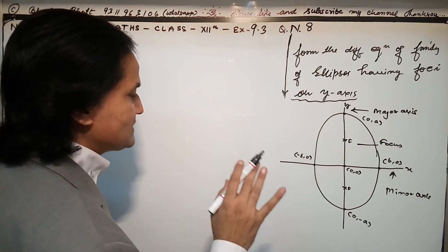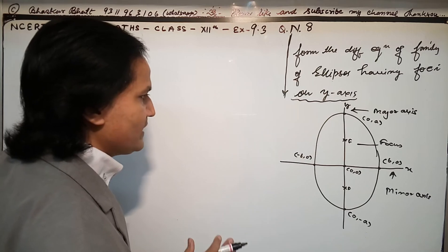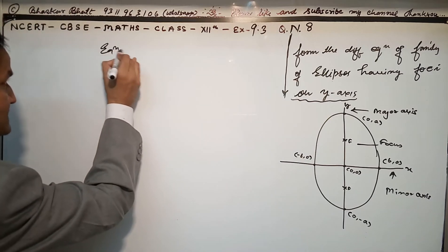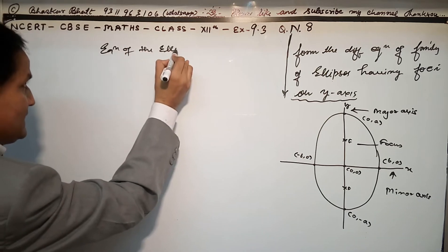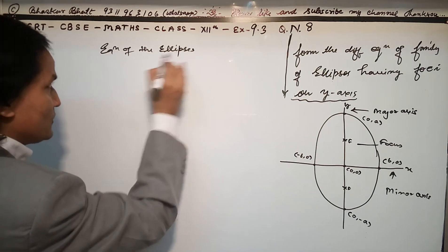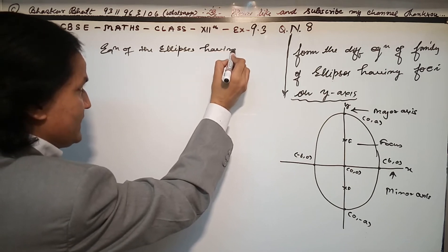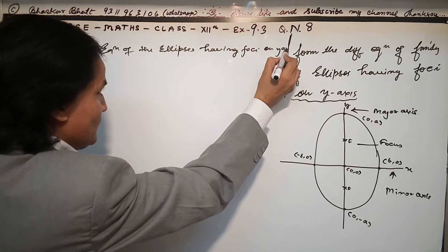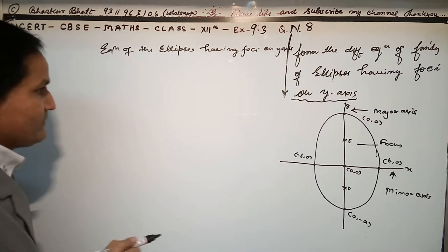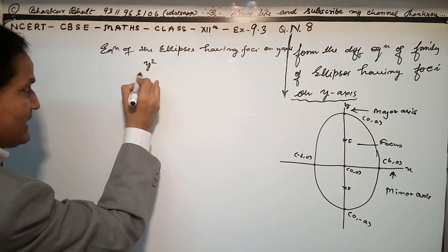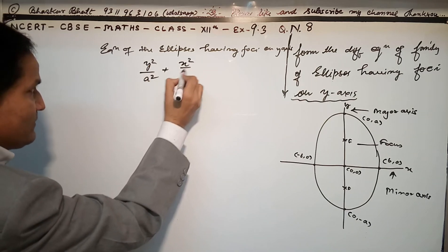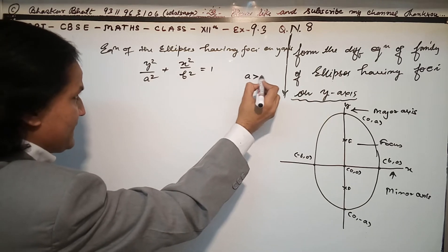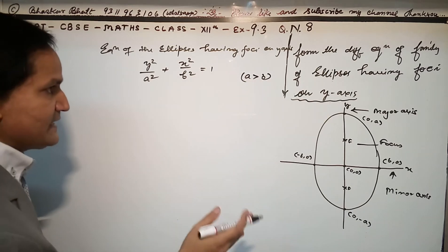We have to discuss the equation of the ellipse — the equation of the family of ellipses having foci on the y-axis. The equation will be y²/a² + x²/b² = 1, where a is greater than b.